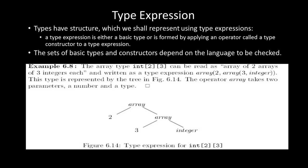the array type integer 2 by 3 can be read as an array of two arrays of three integers each. It will be written as a type expression like array(2, array(3, integer)). This type is represented by a syntax tree, and the operator 'array' takes two parameters: a number and a type.